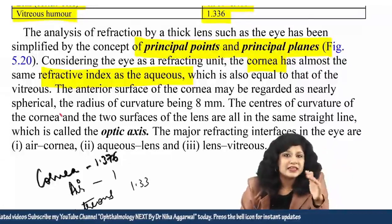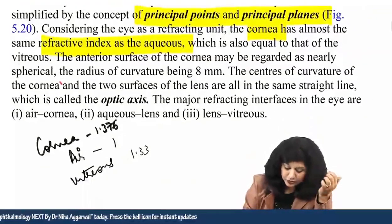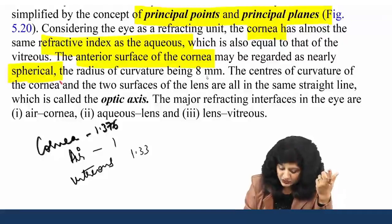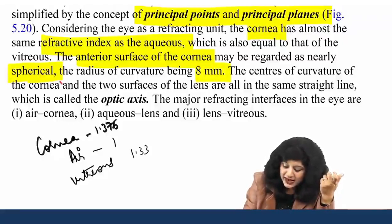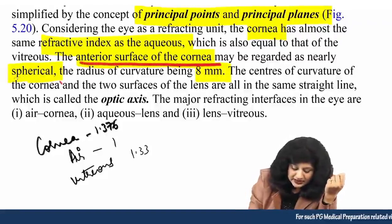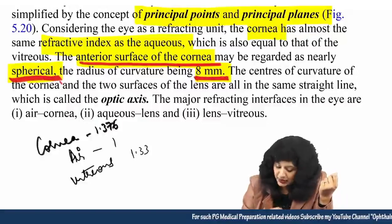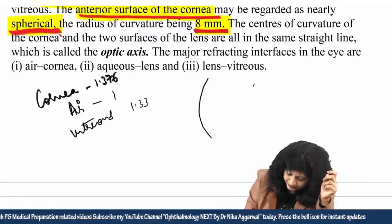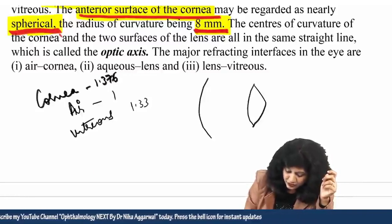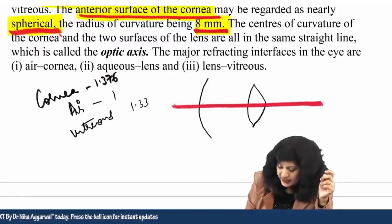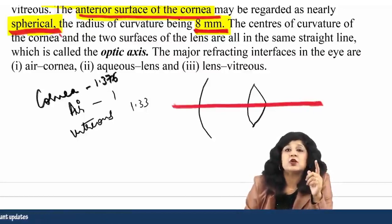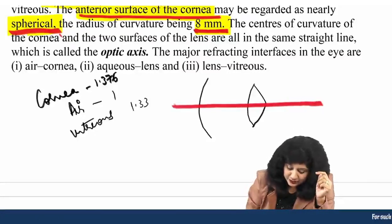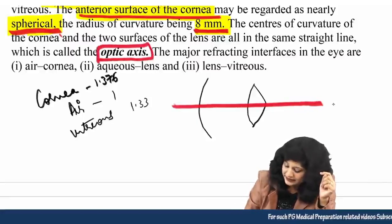The anterior surface of the cornea may be regarded as nearly spherical with a radius of curvature of 8 mm. The centers of curvature of the cornea and the two lens surfaces all lie on the same straight line — this is the optical axis, passing through the center, similar to the principle seen in laws of reflection.